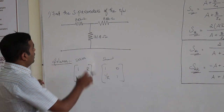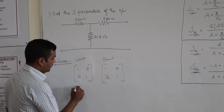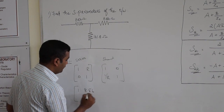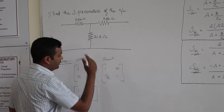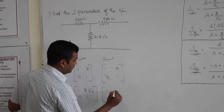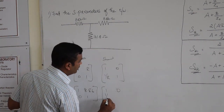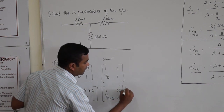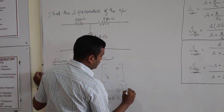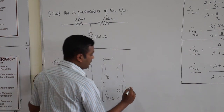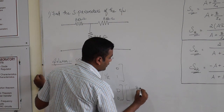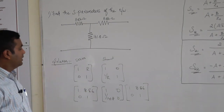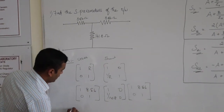Writing the ABCD matrix for this network: the first element is in series, so its matrix is [1, 8.56; 0, 1]. The second element is in shunt, so its matrix is [1, 0; 1/141.80, 1]. The third element is in series again, so its matrix is [1, 8.56; 0, 1]. If you multiply these three matrices, you will get the ABCD matrix of the whole network.